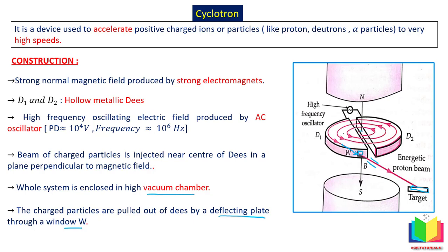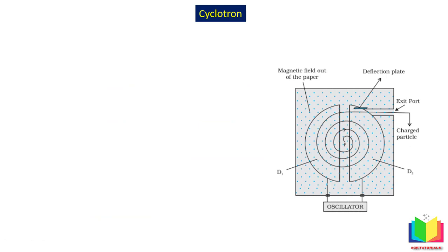Now we will discuss the working — how does the particle spiral and accelerate. We observe the cyclotron from below. The magnetic field is coming out of the plane of paper. We have two hollow metallic D-shaped discs and an oscillator providing AC voltage. When the desired speed is achieved, there is an exit port from which the particle comes out and strikes the target.